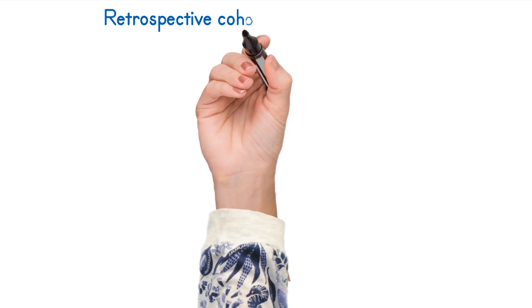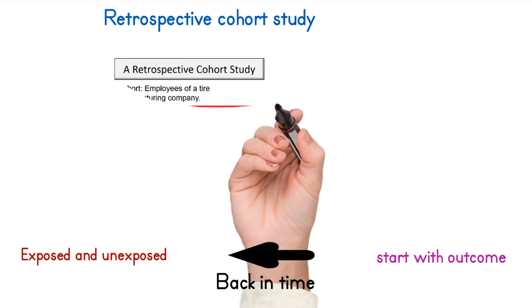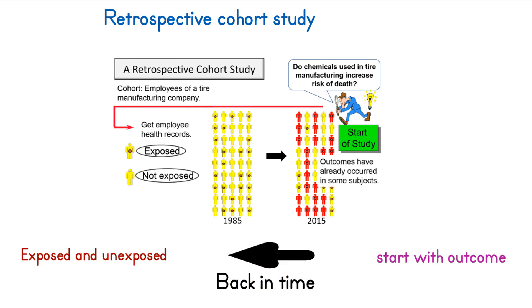In retrospective cohort, we compare outcomes in subjects exposed to a common factor and another group of subjects not exposed to that factor. All exposures and disease or mortality events have already taken place by the time the study begins. Meaning we are going back in time.